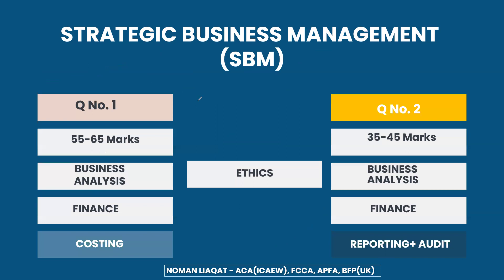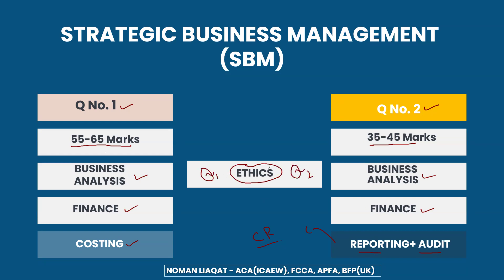Regarding the SBM paper structure, Question 1 is approximately 55 to 60 marks while Question 2 is approximately 40 to 45 marks. In Question 1, you will have the same Business Analysis and Finance content, but there will also be a section on Reporting and Audit. Ethics could be examined in Question 2, or could be examined in both questions. There will definitely be an ethics requirement — either as an explicit requirement or as a hidden requirement.